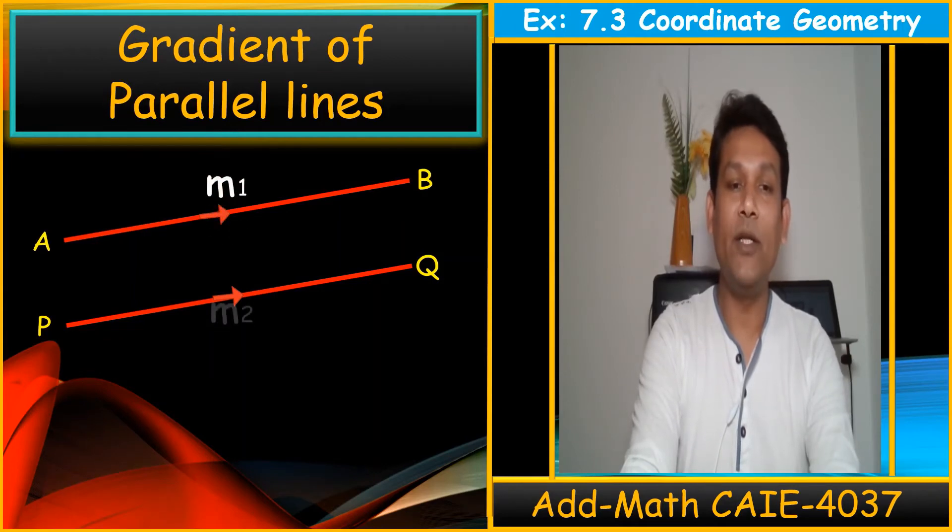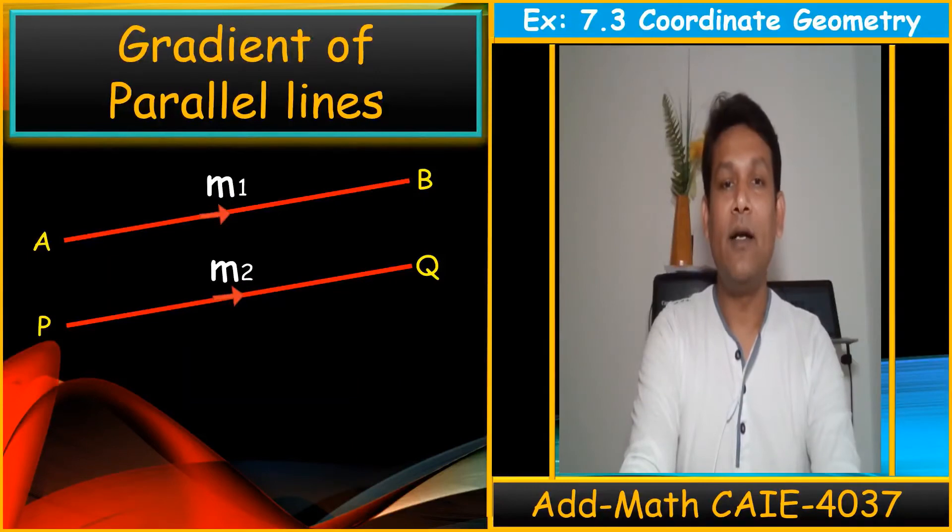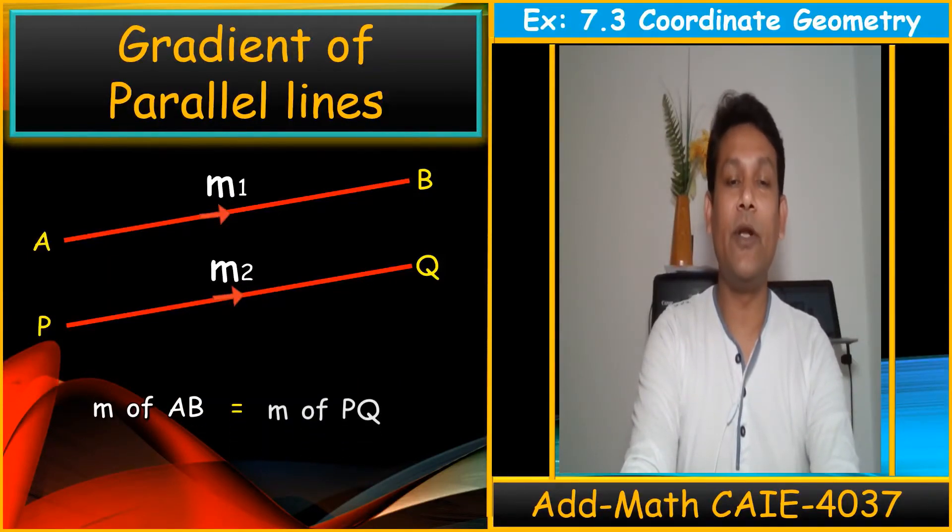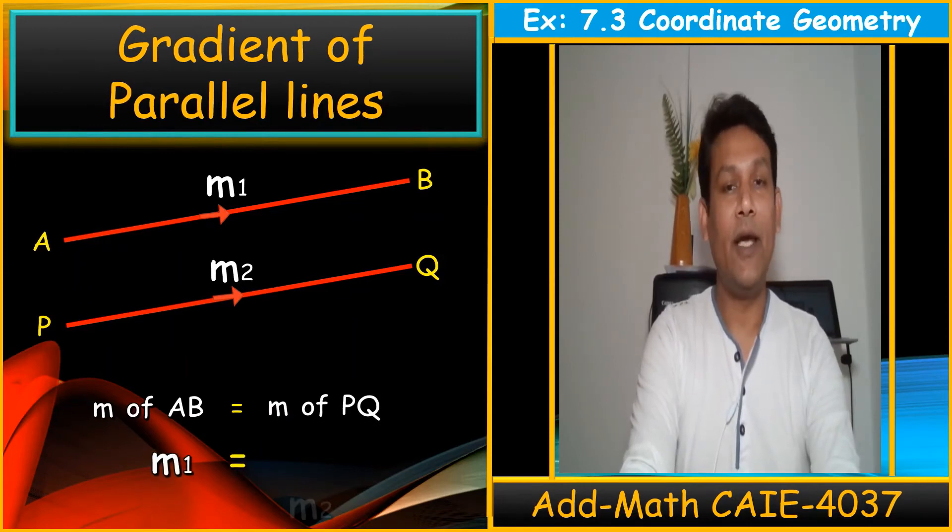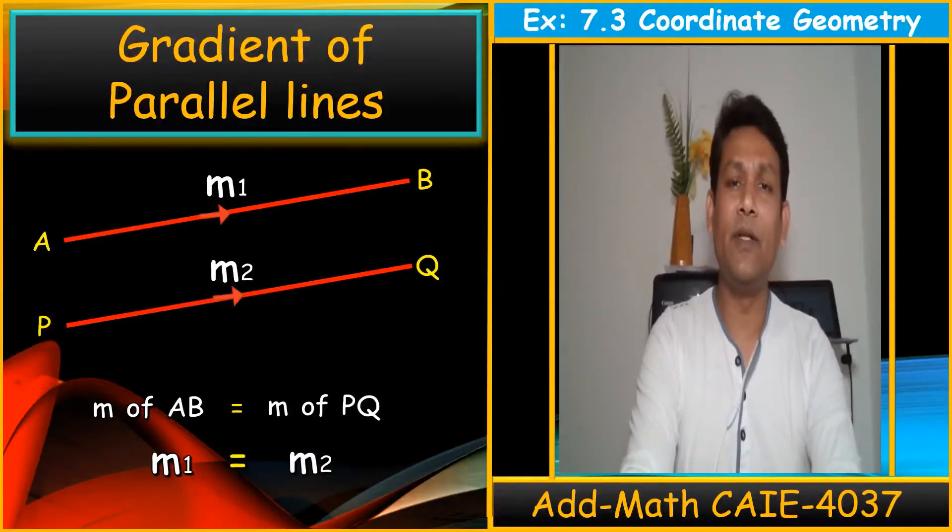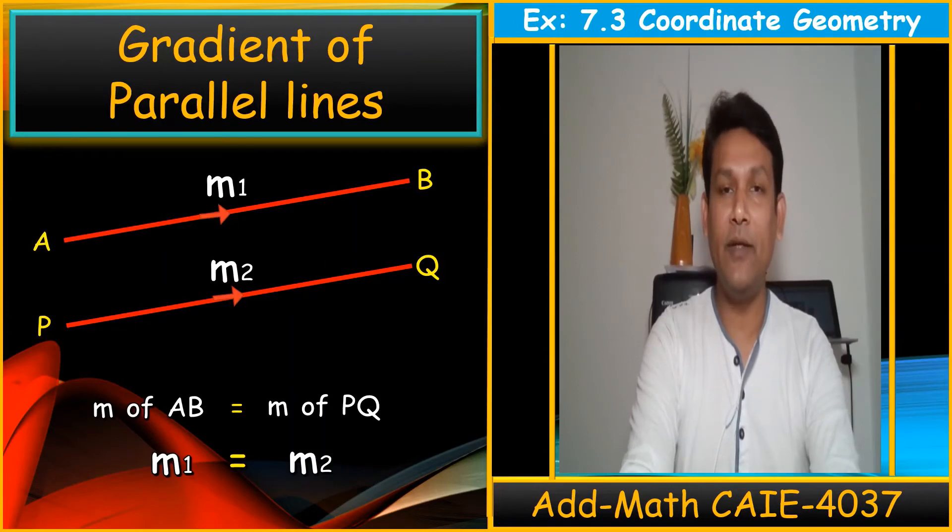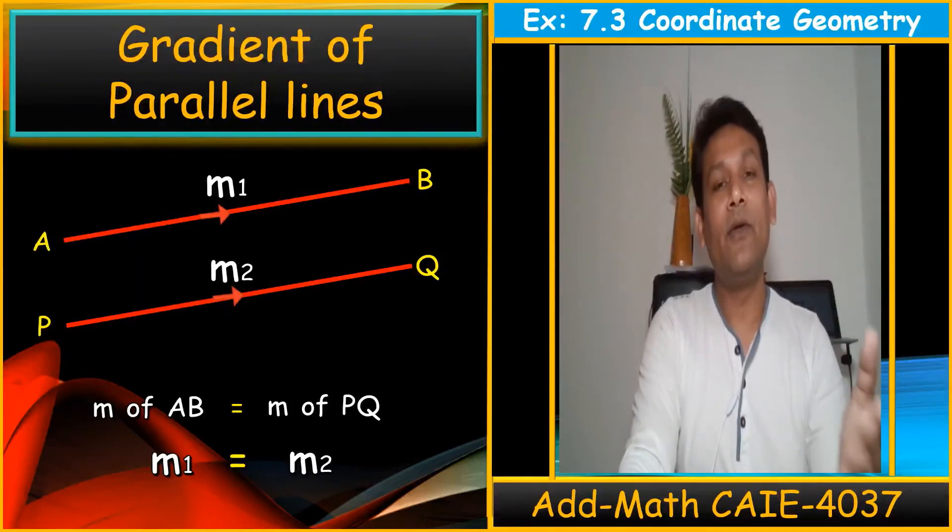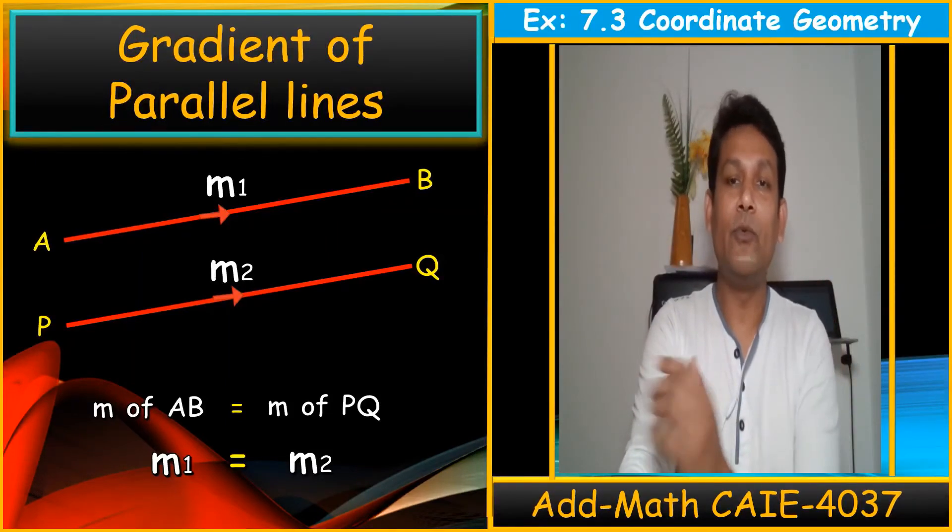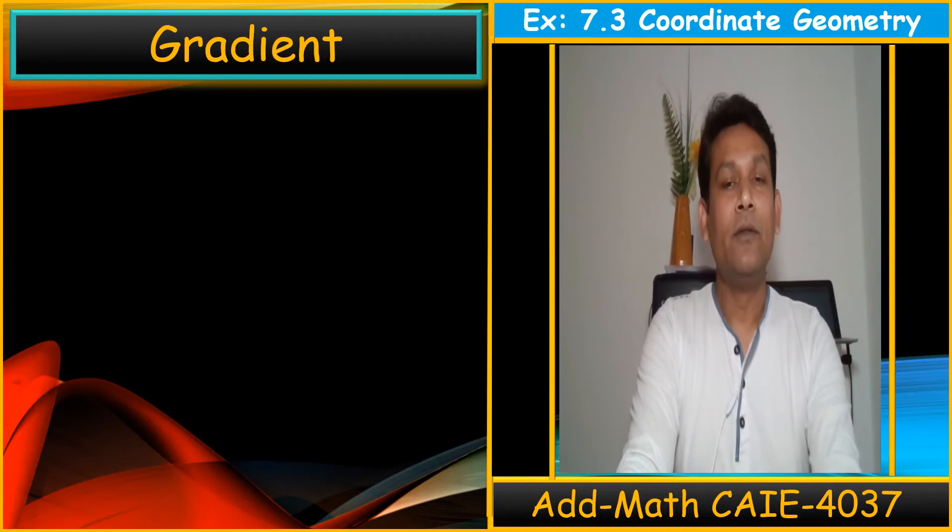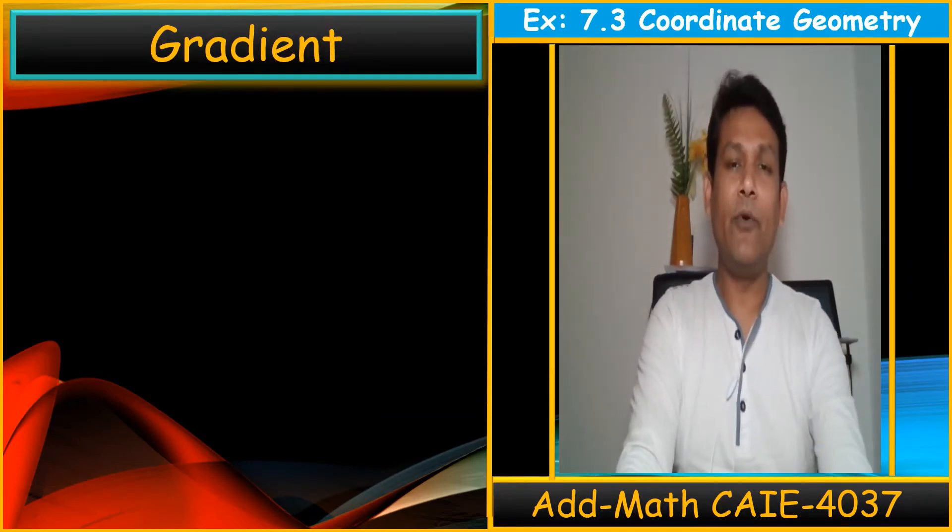So it means gradient is M1 and gradient is M2. Very simple. When the lines are parallel, the gradient is always equal. So gradient of AB is equal to gradient of PQ means M1 equals to M2. Very simple. Just remember, we have done gradient, we have done this rise upon run method, we have done the gradient of parallel lines, and the gradient of perpendicular lines we have to do in the next exercise. Normally, I want to just give, just remember the key points for the gradient.